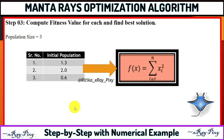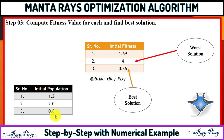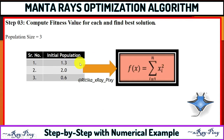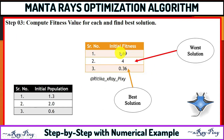Now using a fitness function, or cost function, we will calculate the fitness value for each agent in the current population. I'm using the sphere function here. Put all the values into this function and we get the initial fitness values.